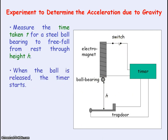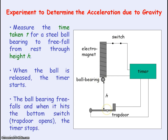When the switch is opened, the timer starts and the electromagnet is switched off so the ball bearing is released and free falls. When the ball bearing hits the trap door and opens the bottom switch, the timer stops. So the timer determines the time taken for the ball bearing to free fall through height h.